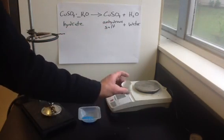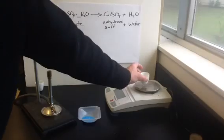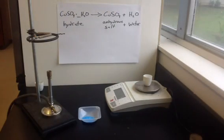To do this, we're going to use a crucible. We'll find the mass of our empty crucible first. The mass of our empty crucible is 24.36 grams.